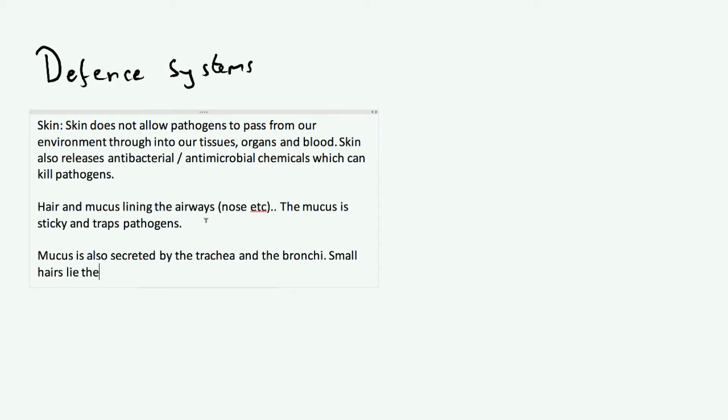The cilia basically waft the mucus to the back of your throat where it can be swallowed. If you ever feel that you've got a load of phlegm at the back of your throat and you swallow it and it gets rid of it, that's what the cilia are doing. They're wafting that mucus to the back of your throat. When it's there and you swallow it, it will go into the stomach like everything else that you swallow.